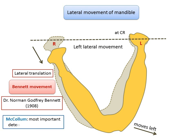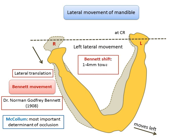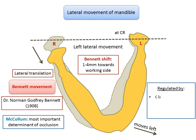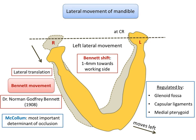McCollum considered Bennett movement the most important determinant of occlusion. During lateral movement, the mandible shifts as a whole — in left lateral movement, the right condyle shifts by about 1 to 4 mm towards the working side. This shift is called Bennett movement. The Bennett shift occurs either before or along with lateral trusion, and is recorded with a pantograph. It is regulated by the anatomical configuration of the glenoid fossa, slackness of capsular ligaments, and contraction of the medial pterygoid on the non-working side.